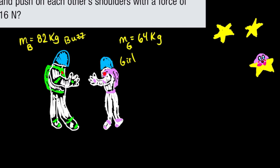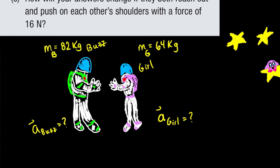They want us to determine the acceleration of each astronaut, given that the woman pushes on the man with a force of 60 newtons to the left. So what we're looking for is the acceleration of each one, and what we're given is that the girl pushes on Buzz with 60 newtons to the left. The force of the girl G on Buzz B is going to be 60 newtons to the left.